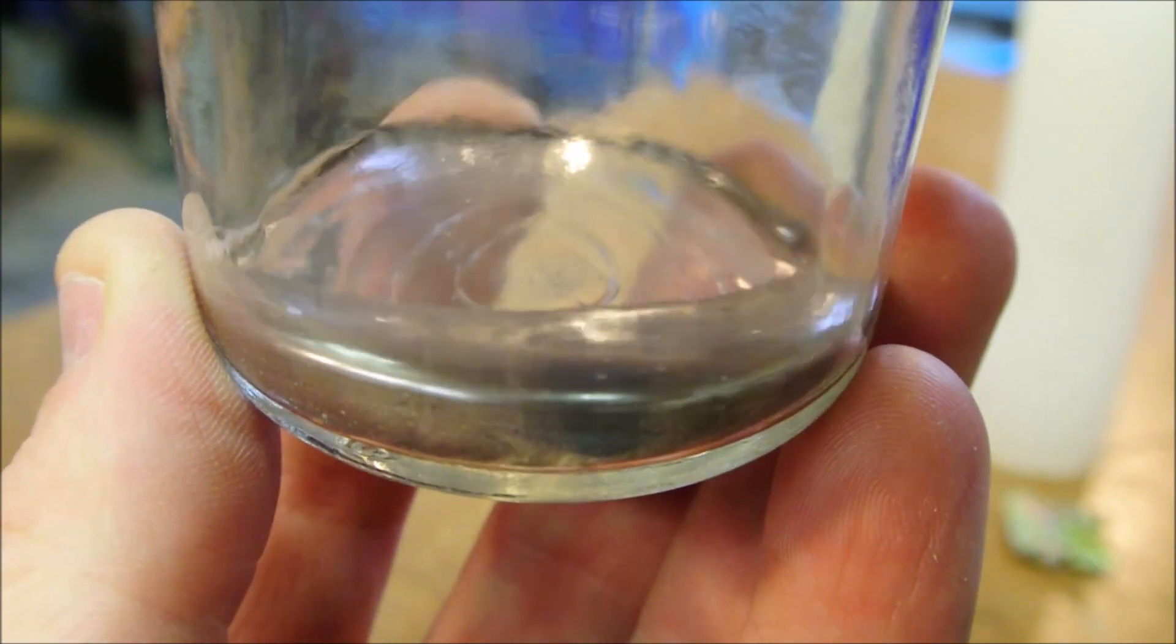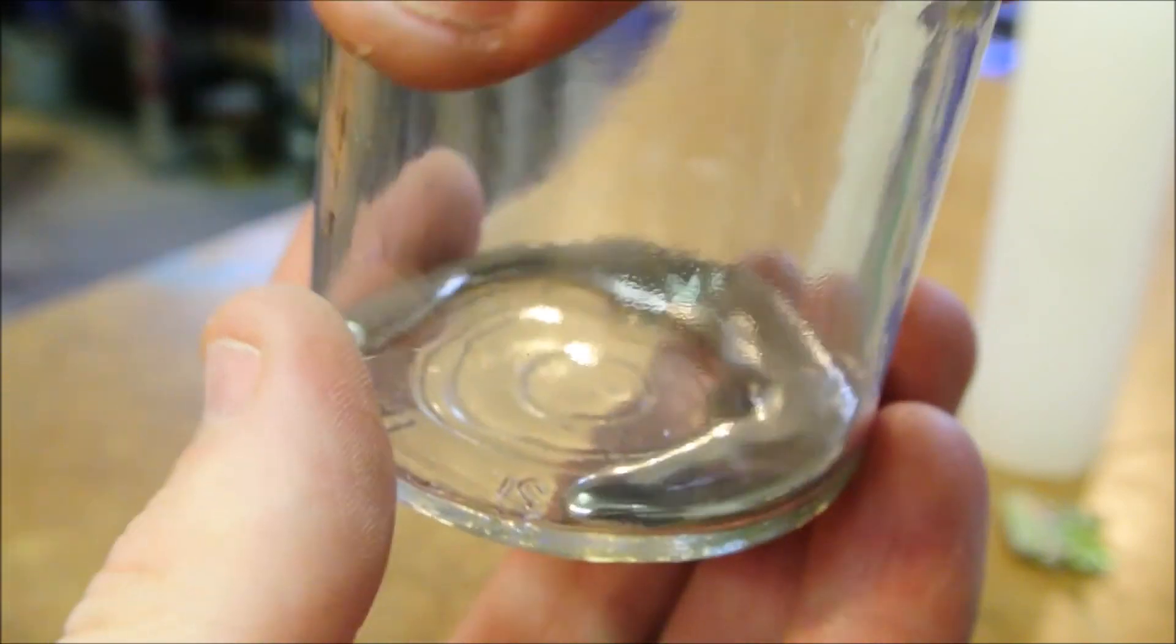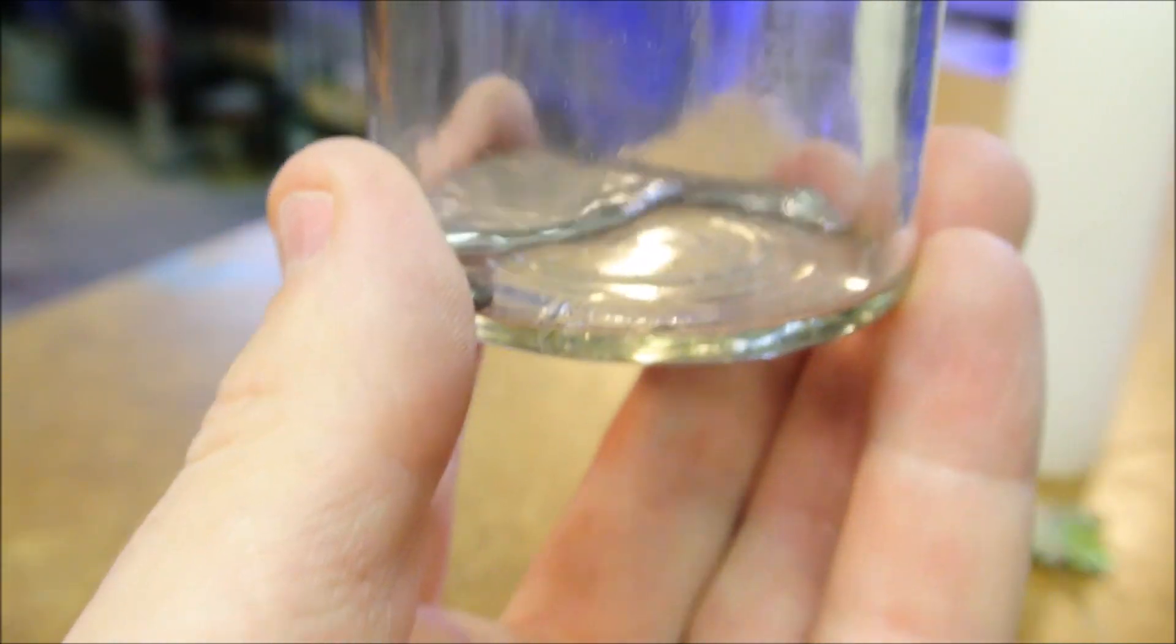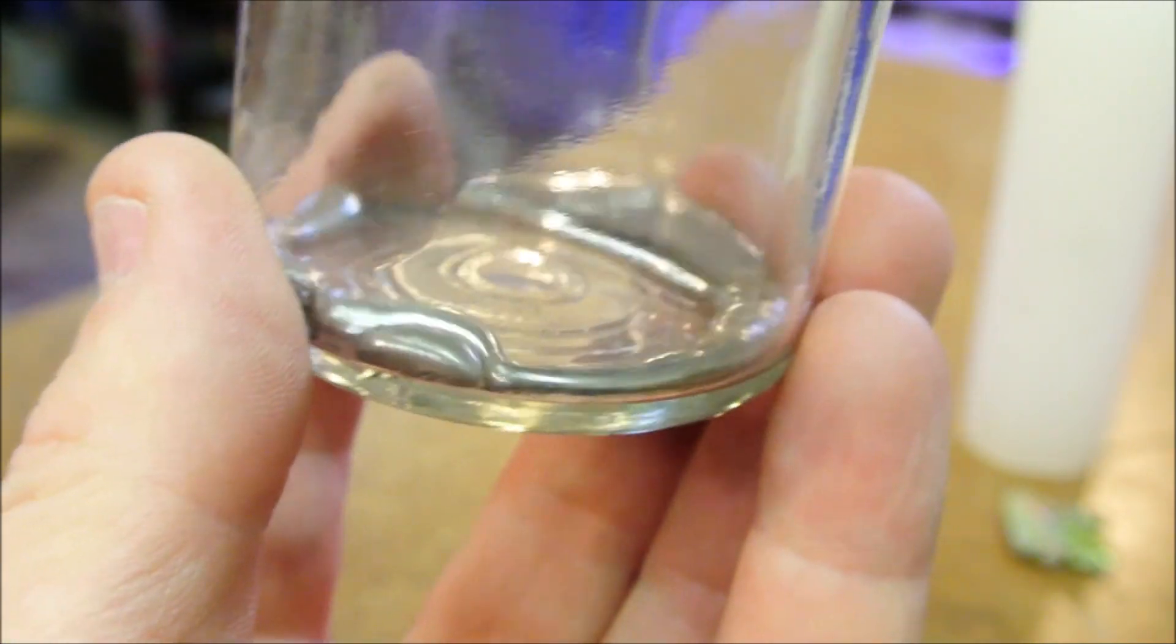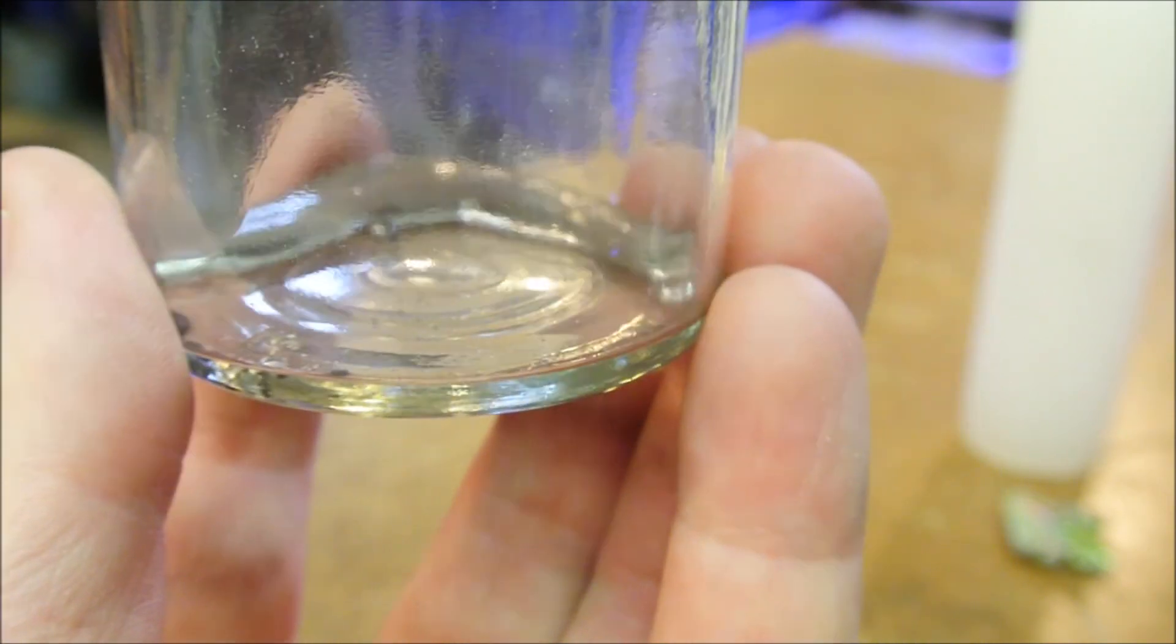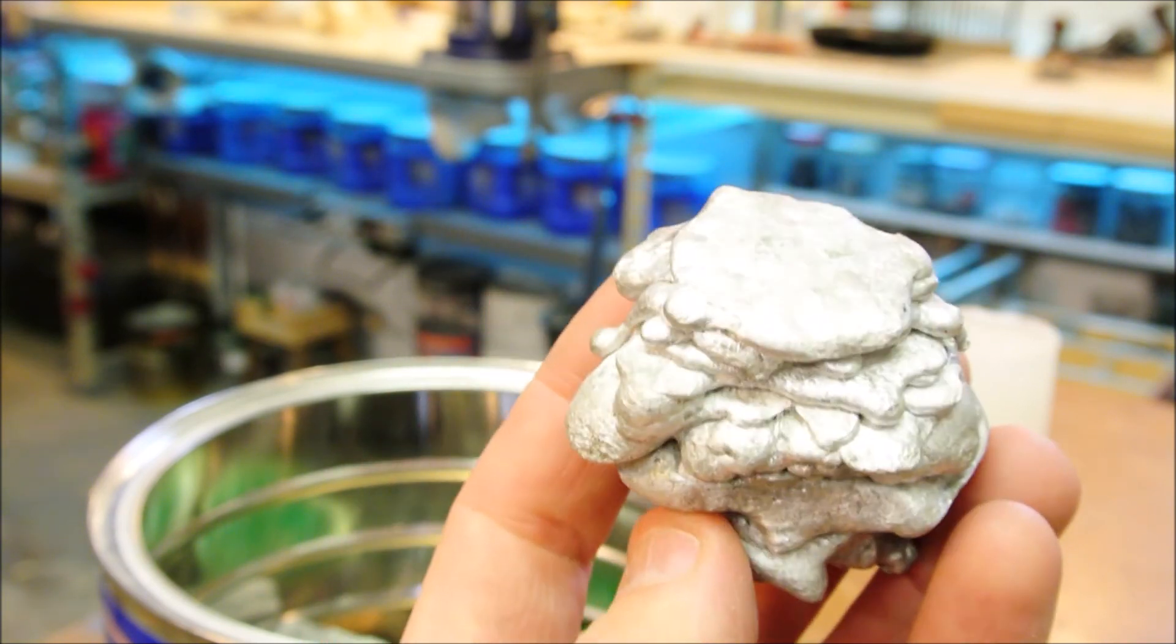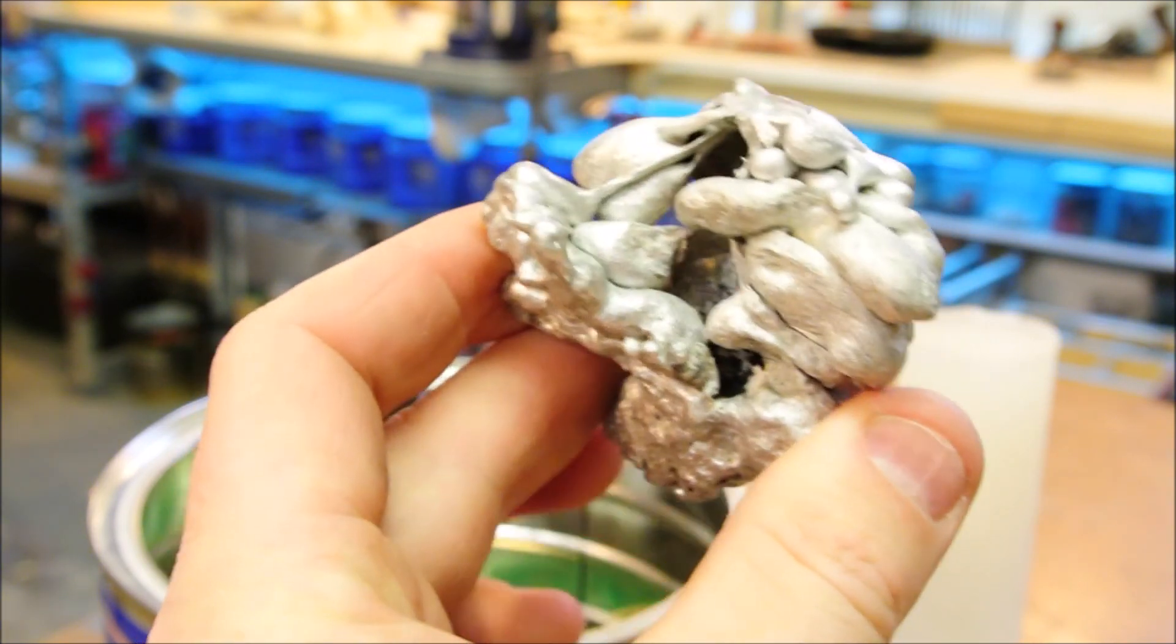A lesser known property of this stuff is that it readily amalgamates with other metals. That is, it will mix and make a cold alloy with other metals like gold, silver. It will certainly amalgamate with this one I remember, for sure. This is aluminum.